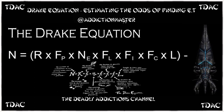L is the length of time such civilizations release detectable signals into space. The challenge, at least for now, is that astronomers don't have firm numbers on any of those variables, so any calculation of the Drake Equation remains a rough estimate. However, recent discoveries — like rocky worlds near Proxima Centauri in the Alpha Centauri system, and TRAPPIST-1 — have increased public attention on the search for life. These stars are red dwarfs that might be too volatile for life, and more study is needed.